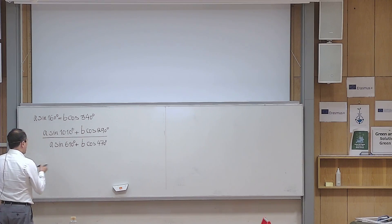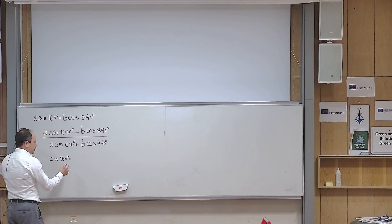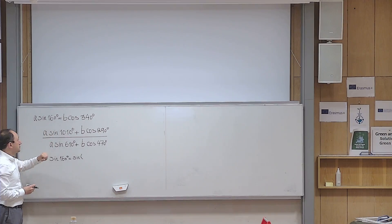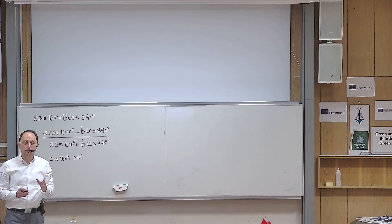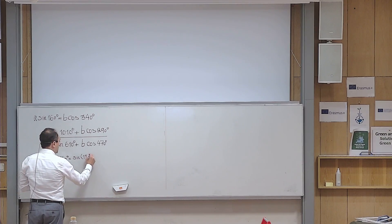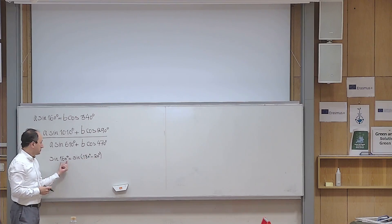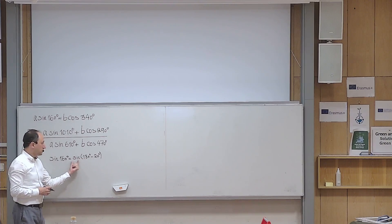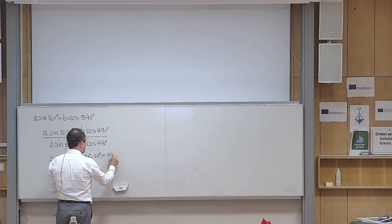So sine of 160 degrees: if you have some experience with the trigonometry of the unit circle, you immediately realize that 160 degrees and 340 degrees are somehow related to the angle 20 degrees in the first quadrant. Because 160 degrees can be viewed as sine of 180 degrees minus 20 degrees — that is the supplement to 20 degrees. Sine of an angle equals the sine of its supplement, so it becomes sine of 20 degrees.